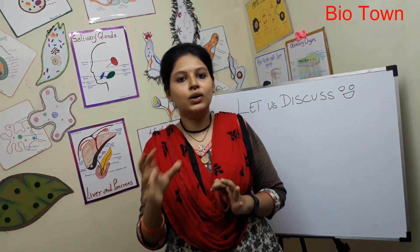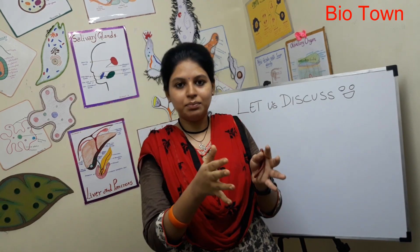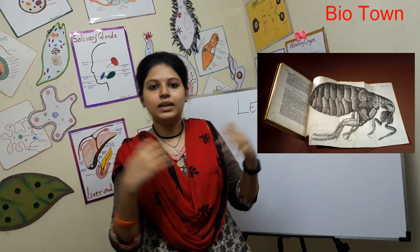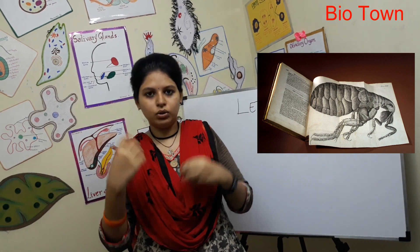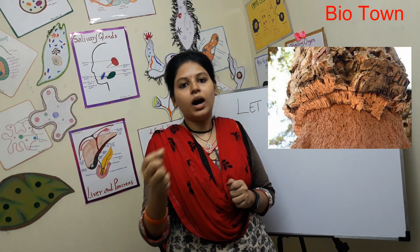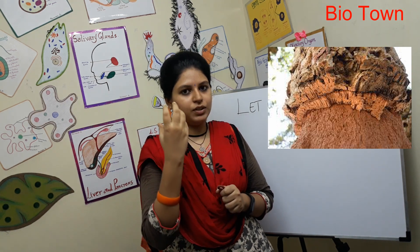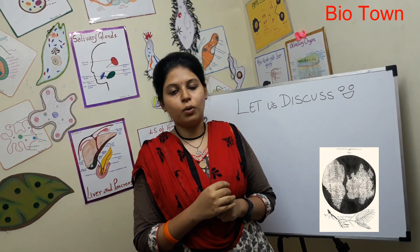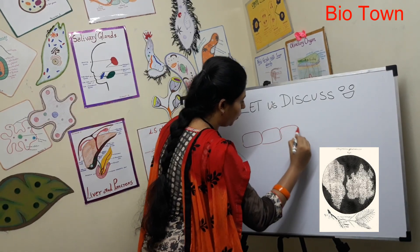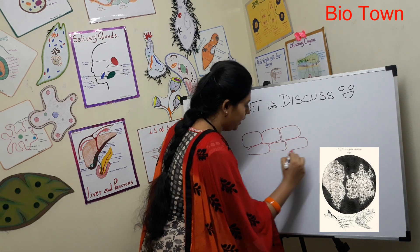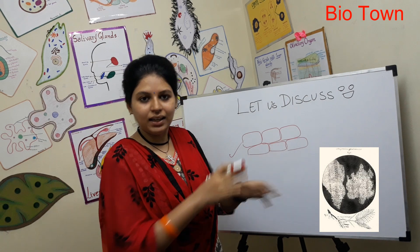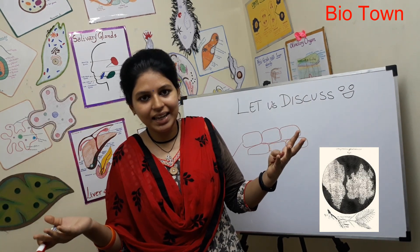He then published a book called Micrographia — 'micro' meaning very tiny, 'graphia' meaning drawing — so 'tiny drawings.' He observed various samples under a microscope, including water and other materials. One day he came upon a small sliver of cork tree and observed it under the microscope, where he found rectangular boxes closely attached to each other.